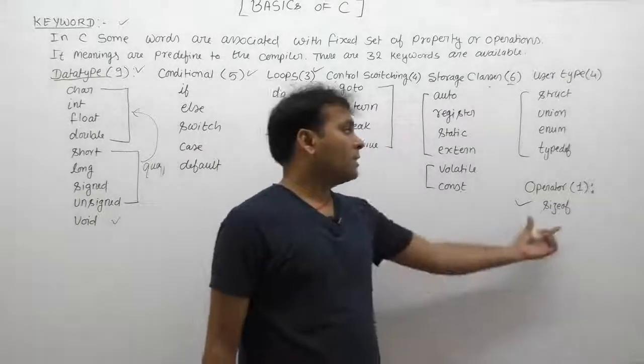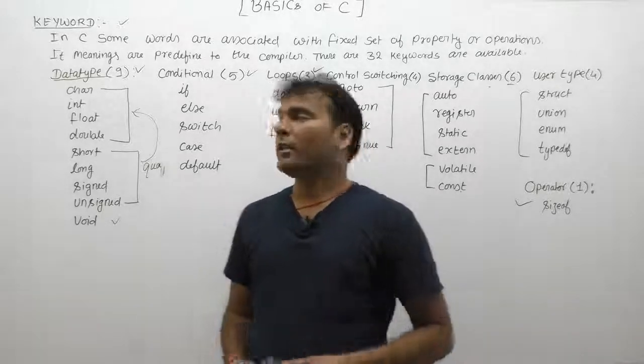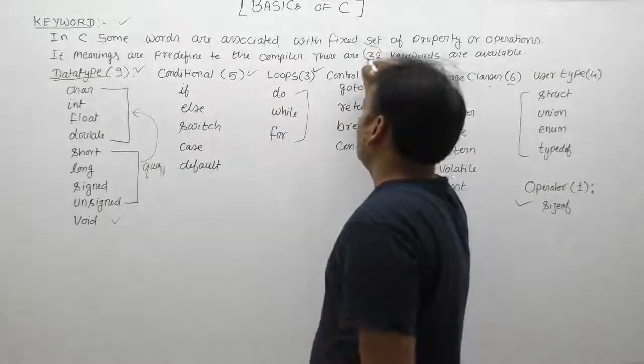Finally, one keyword is associated with operations: sizeof operator. In total, there are 32 keywords available in C language.